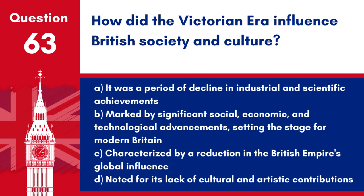Question 63: How did the Victorian era influence British society and culture? a. It was a period of decline in industrial and scientific achievements. b. Marked by significant social, economic, and technological advancements, setting the stage for modern Britain. c. Characterised by a reduction in the British Empire's global influence. d. Noted for its lack of cultural and artistic contributions. Answer: b. The Victorian era was a time of great change in Britain, with the expansion of the empire, advancements in technology and industry, and changes in social attitudes.